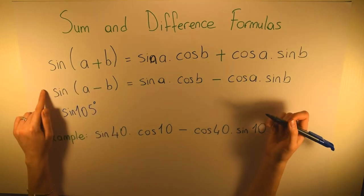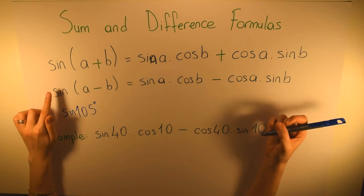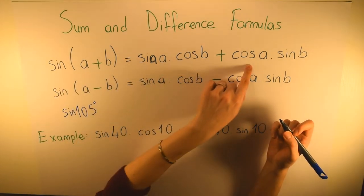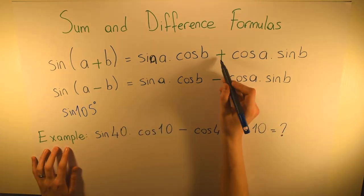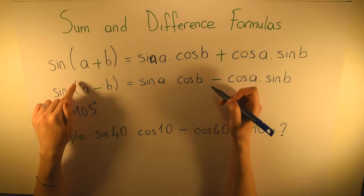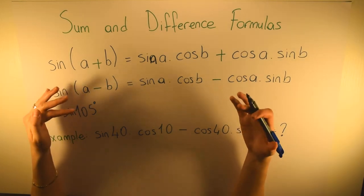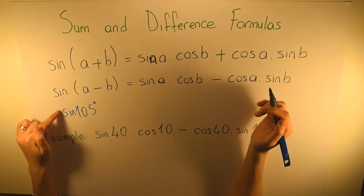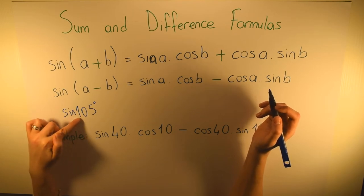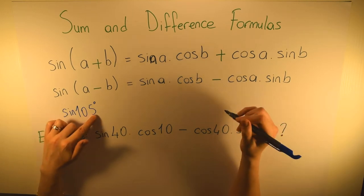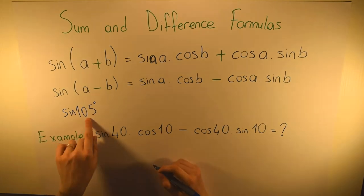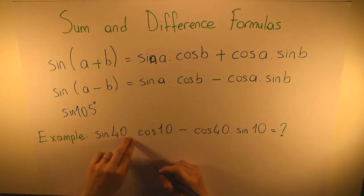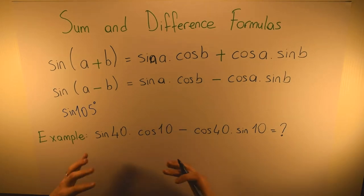In these formulas, as you can see, there is one sine and one cosine on each side, and the signs are the same for the sine formula — this is just to help you remember. When we come back to sine 105 degrees, all you need to do is divide this angle into two parts that are easier to work with.